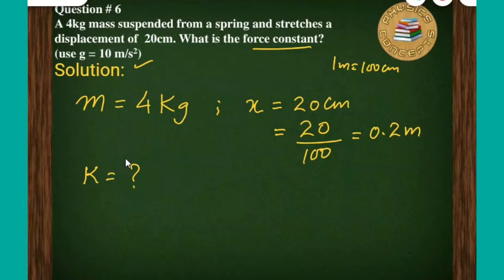Now I would use the formula, that is K is equal to f over x. That is basically Hooke's law. We know that f is equal to ma, or mg over x.